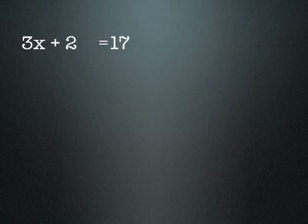Say you have an equation 3x plus 2 equals 17. That means that x has been multiplied by 3, had 2 added to it to make 17. So what we need to do is find out what x was to start with. We need to undo all of the things that have been done to it, going backwards, to get x on its own.